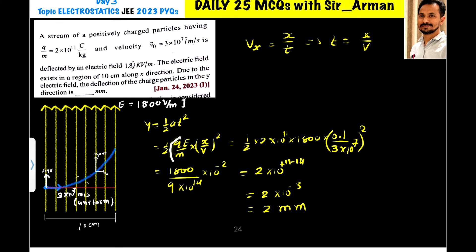Then the charge to mass ratio q by m is given 2 into 10 raise to 11. Electric field is given 1800 volt per meter. X is 0.1 that is 10 centimeter. And the velocity of the charge particle is given 3 into 10 raise to 7. If you solve this you will get answer 2 mm. So here you can put 2.